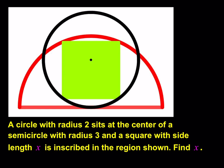Alright, without further ado, let's get started. So we do have a circle with radius 2 that sits at the center of a semicircle with radius 3, and then a square with side length x is inscribed in the region shown. We're supposed to find the side length of the square.